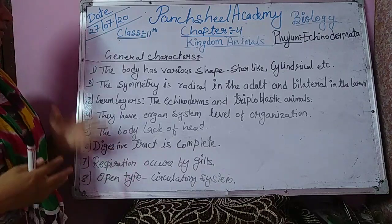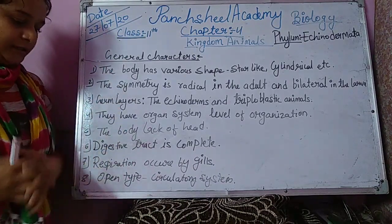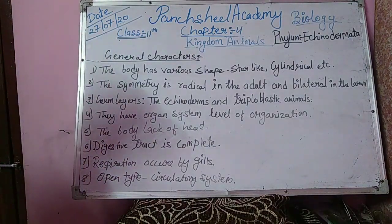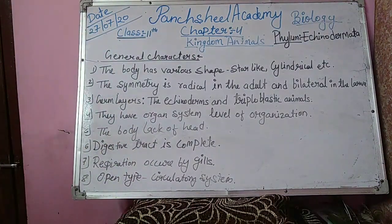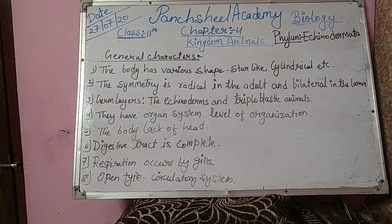Some other general characters of Echinodermata: the body wall epidermis is a single layer and ciliated. Body cavity or true coelom lined by ciliated mesothelium is present. Excretory system — there are no excretory organs. Nitrogenous waste is ammonia.